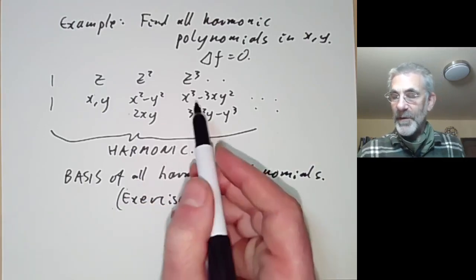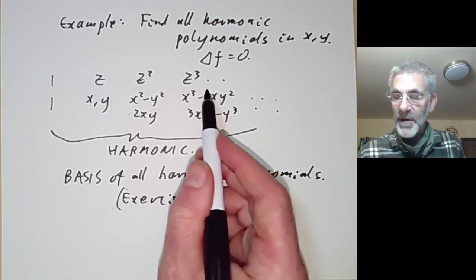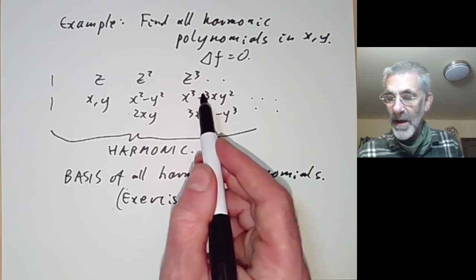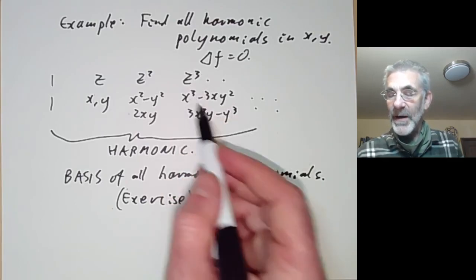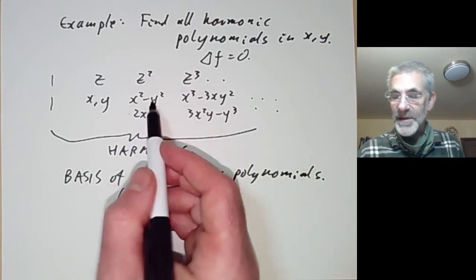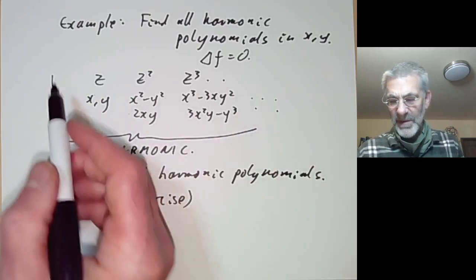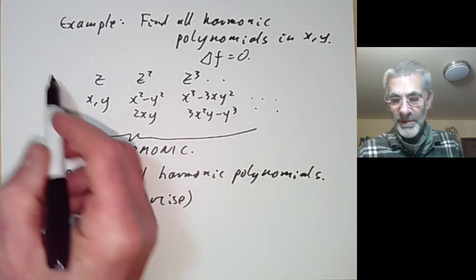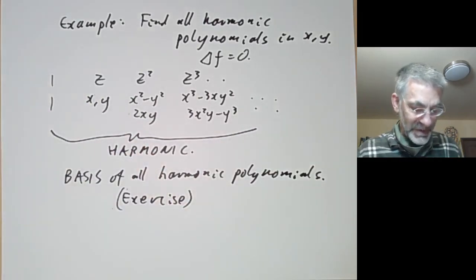I'll leave it as an exercise to show we get all of them — it's not terribly difficult. You just need to show that the space of homogeneous harmonic polynomials of any given degree is two-dimensional, and that easily shows we've got all of them, except in higher dimensions of course.